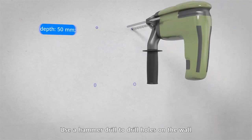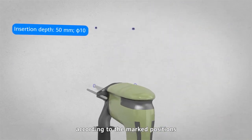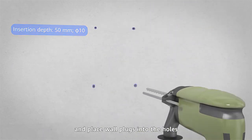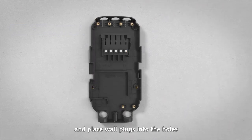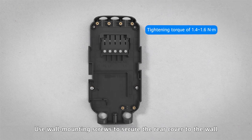Use a hammer drill to drill holes on the wall according to the marked positions, and place wall plugs into the holes. Use wall mounting screws to secure the rear cover to the wall.